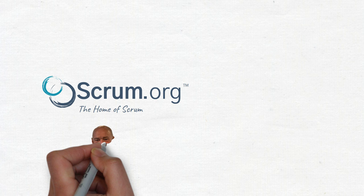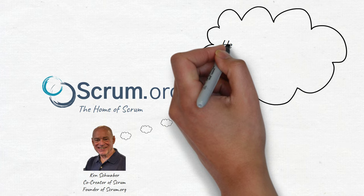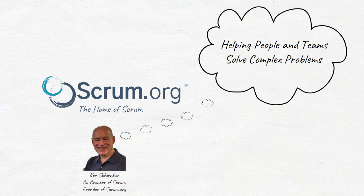Scrum.org was founded in 2009 by Scrum co-creator Ken Schwaber as a mission-based organization focused on helping people and teams solve complex problems. That mission drives everything that we do.